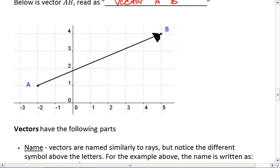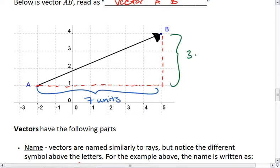Then looking above, our vector has a horizontal distance covered and a vertical distance covered. Horizontally, we cover seven units. Vertically, we cover three units.